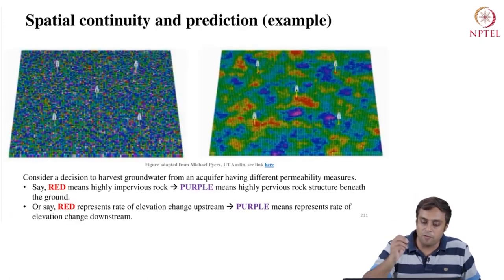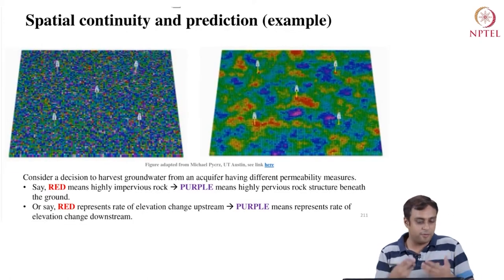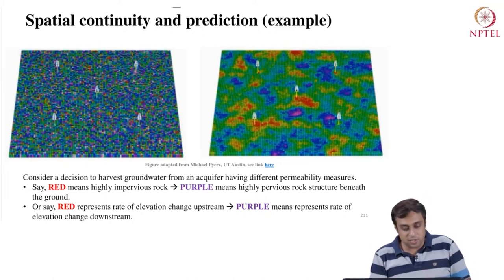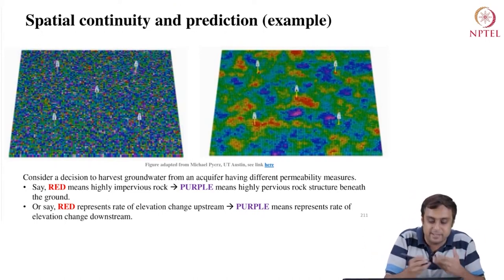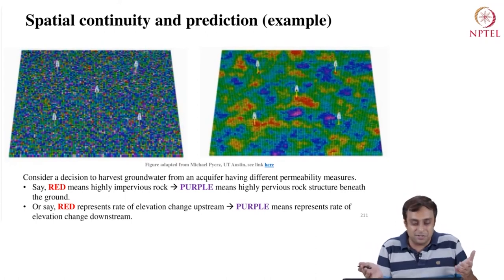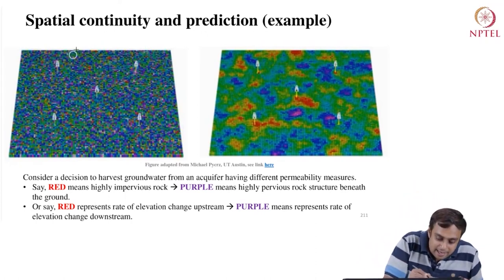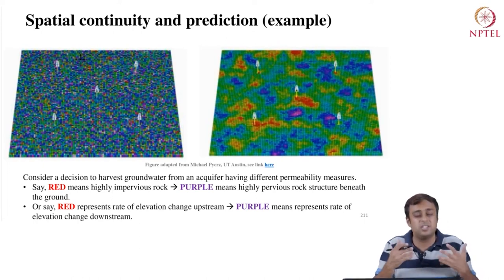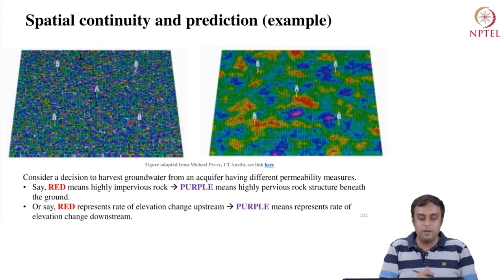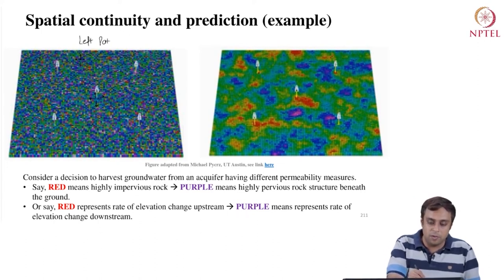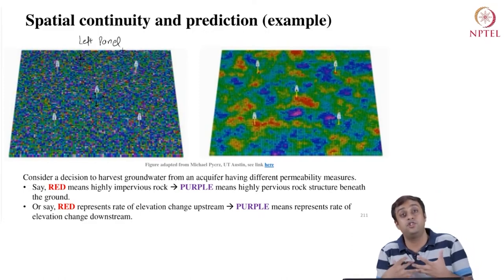Let's look at a nicer example by Professor Michael Perch. On the left-hand side you see a really random process — little cells over which data are distributed — and if you are standing on any cell, it is really hard to predict what is going on in its neighborhood because the neighborhood is so heterogeneous, so different, no matter where you stand on the left panel.